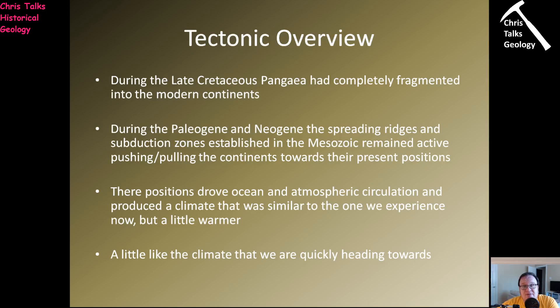As we go into the Cenozoic and these continents migrate northwards, Africa eventually makes contact with Europe and Asia, and North America and South America eventually join up. Suddenly you end up with isolated ocean basins — the Indian Ocean, the Atlantic, and the Pacific — each with their own localized environment. This shift from a more homogenized global climate to one where ocean basins operate as isolated systems has a big effect on global climates.